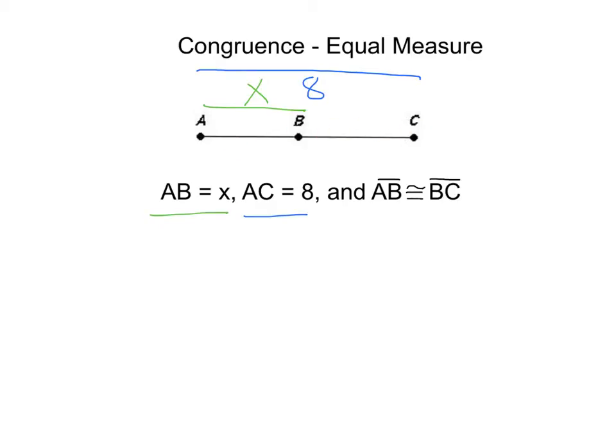If that is the case, since AB is congruent to BC, I know that BC has to be x as well because these are the same measure. Now if we wanted to set up an equation, we could say that x plus x equals the big piece, 8. We could solve from there.